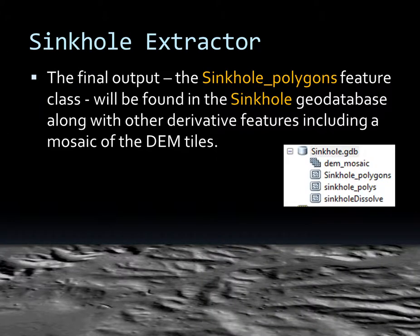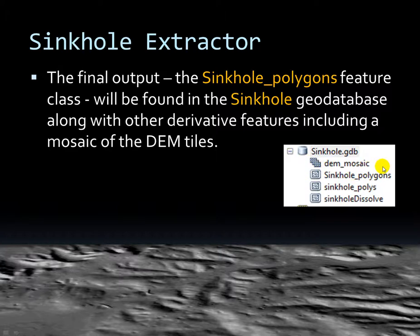In the end, this tool will create a sinkhole geodatabase containing the sinkhole polygons feature class as the final product. There are also a few other datasets created — if you find you are not getting enough information, you can examine these to determine if the filtering process is removing too many features. A DEM mosaic is also preserved in case you would like to use it for other projects in the future.